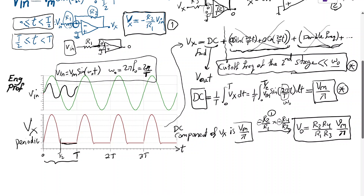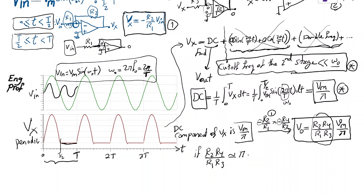If you select the scalar coefficient R2*R4/(R1*R3) to be roughly equal to pi, then Vout becomes approximately Vm, which means the circuit functions as a peak detector.